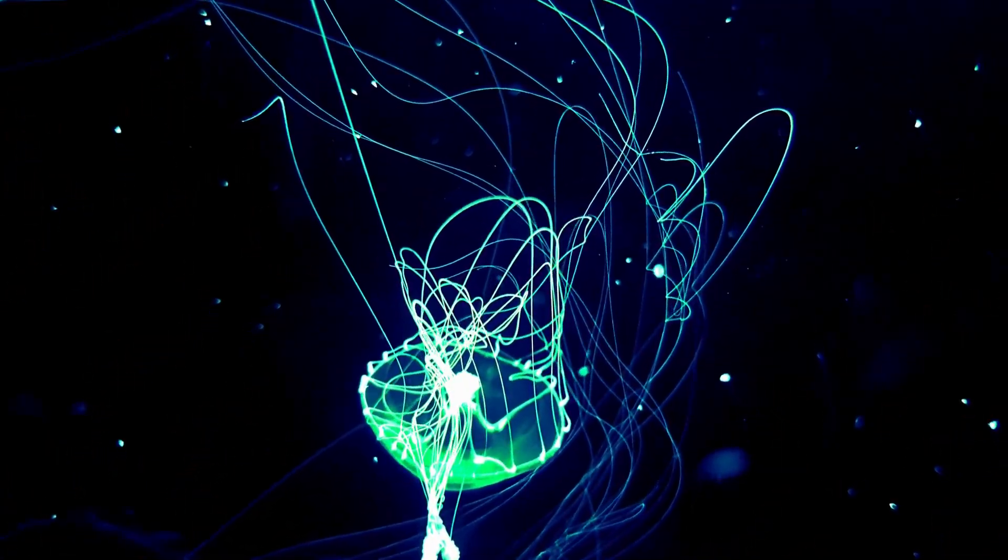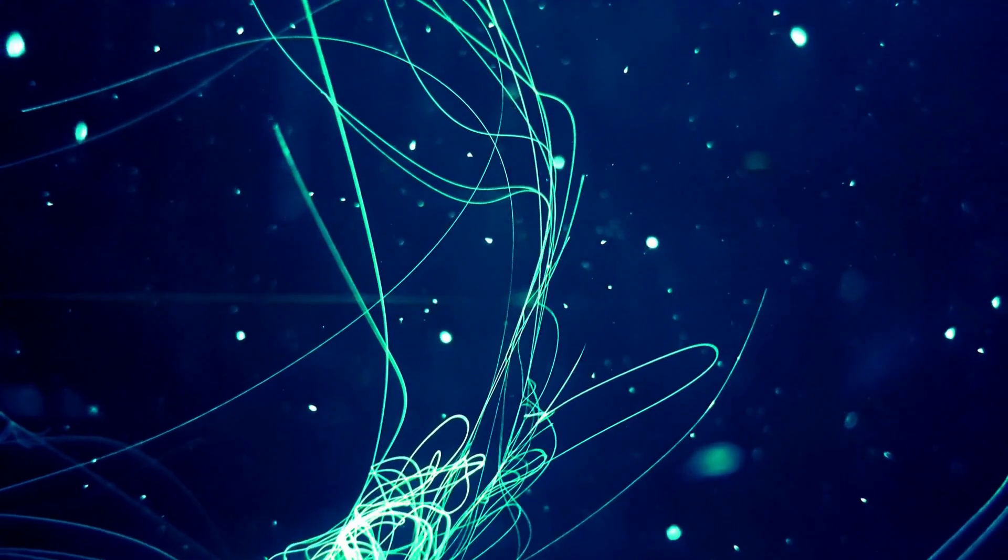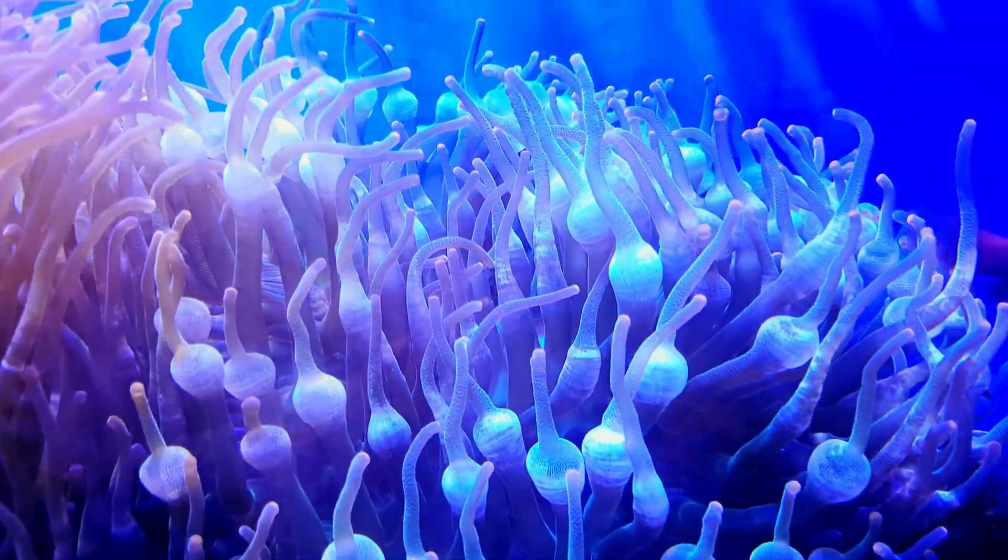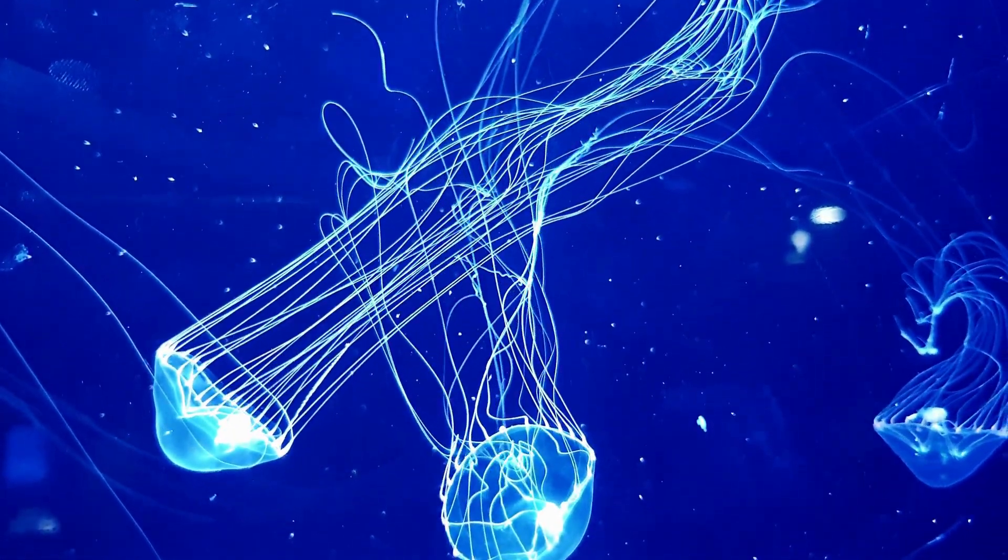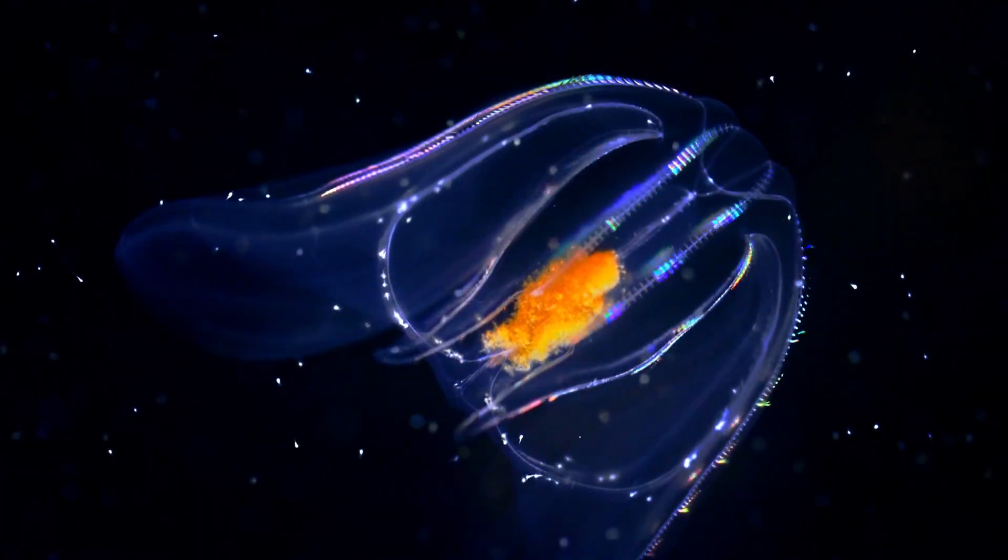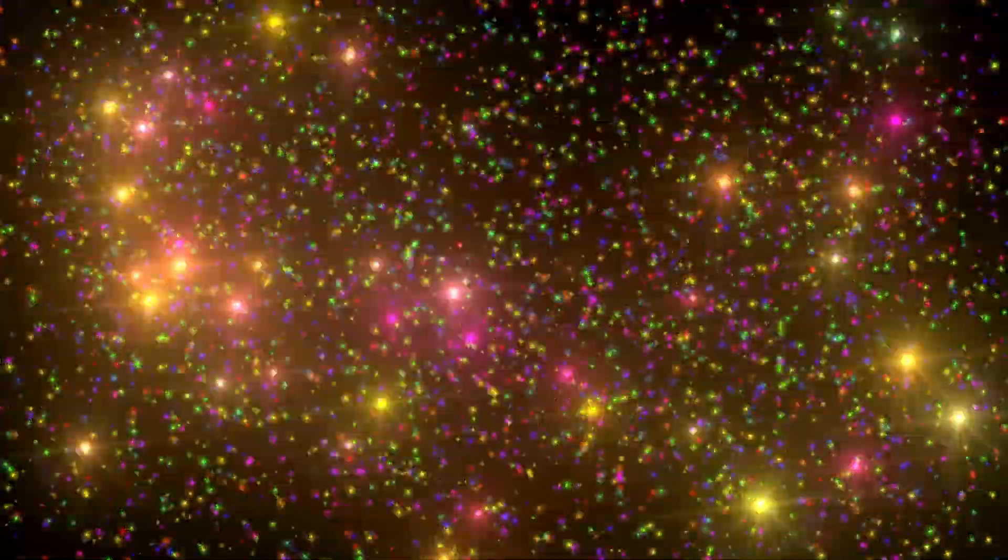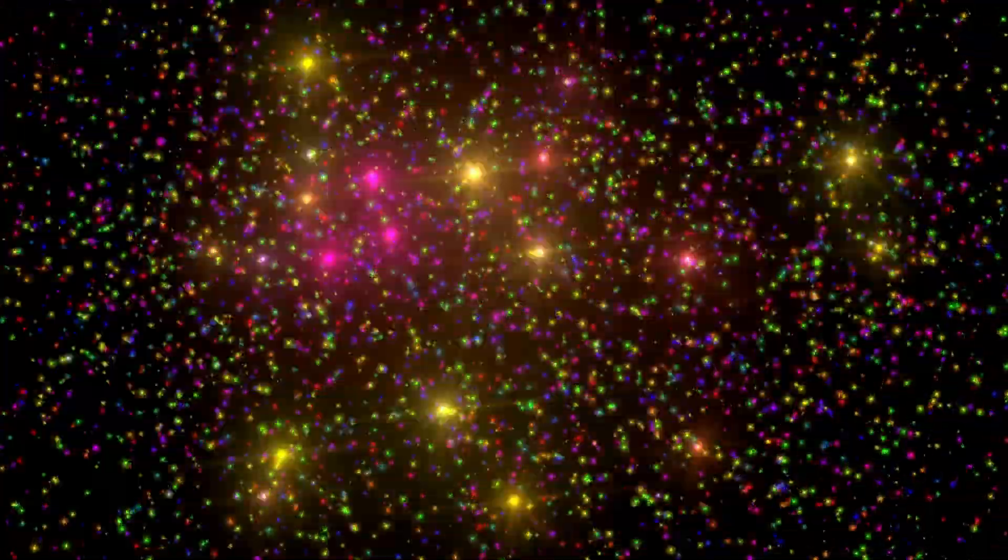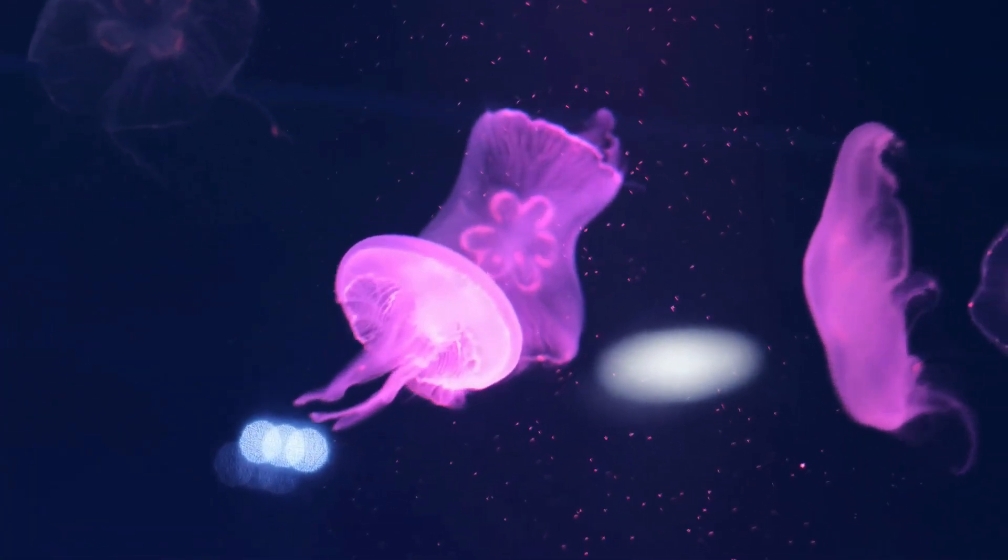Deep-sea organisms also harness bioluminescence to their advantage in the pitch-black depths of the ocean, albeit with variations in their chemical systems and applications. Specialized light-producing organs, known as photophores, are a hallmark of many deep-sea creatures. These photophores house the necessary chemicals and structures for bioluminescence. The purposes of bioluminescence in this realm are diverse and ingenious.